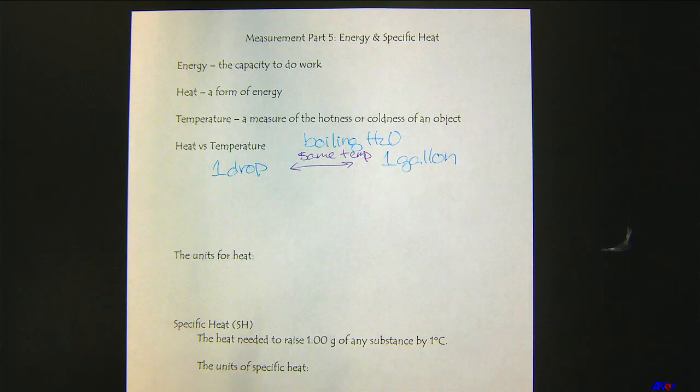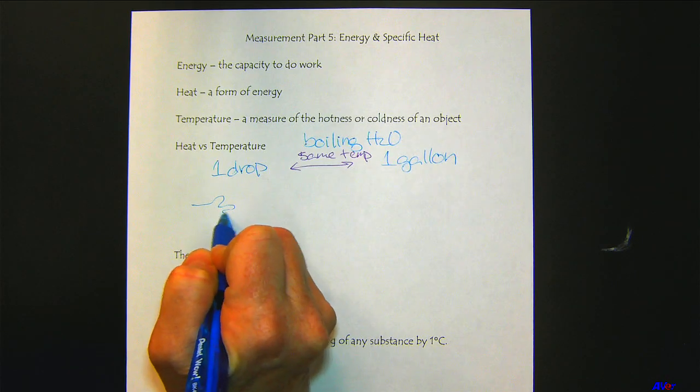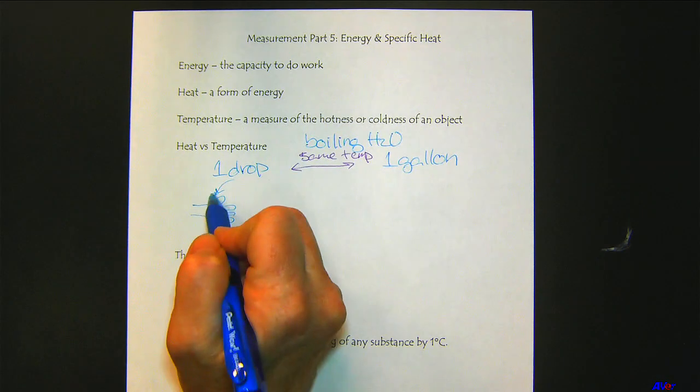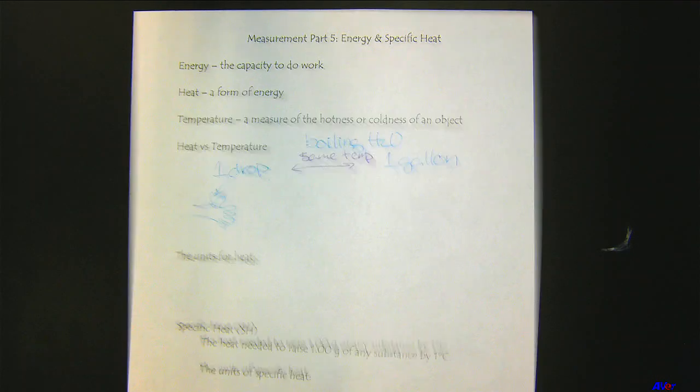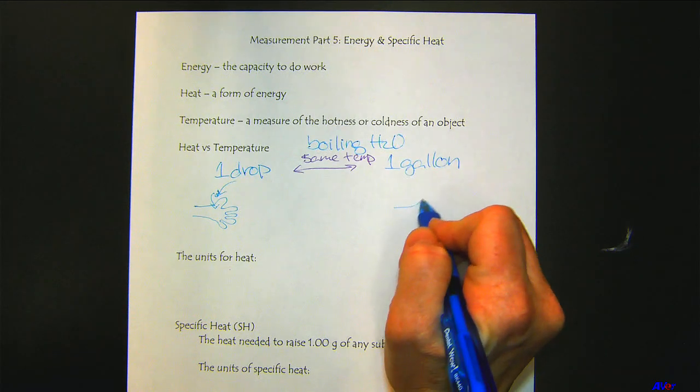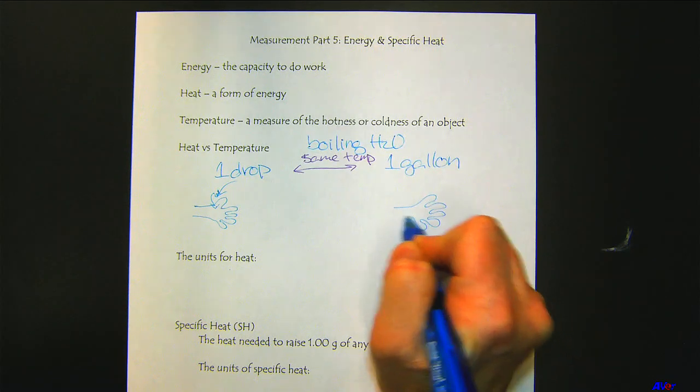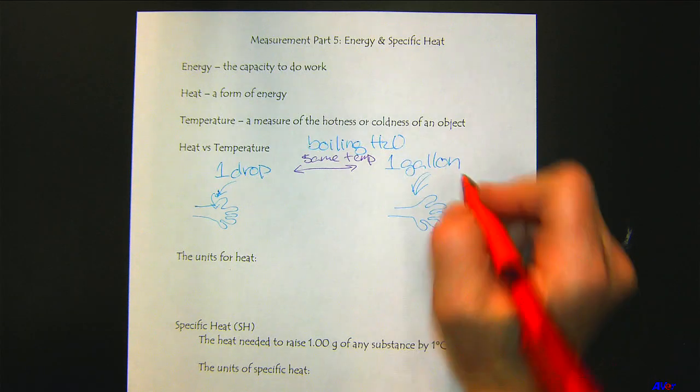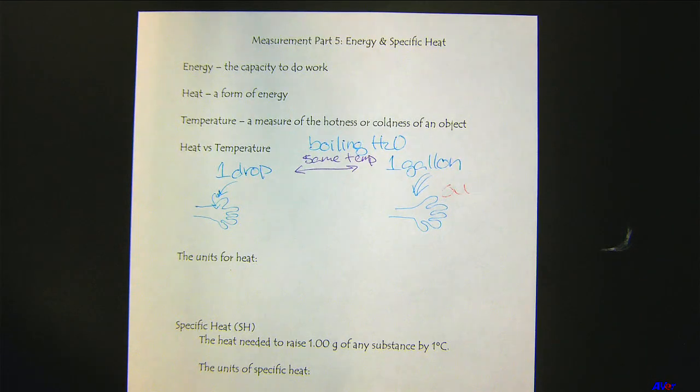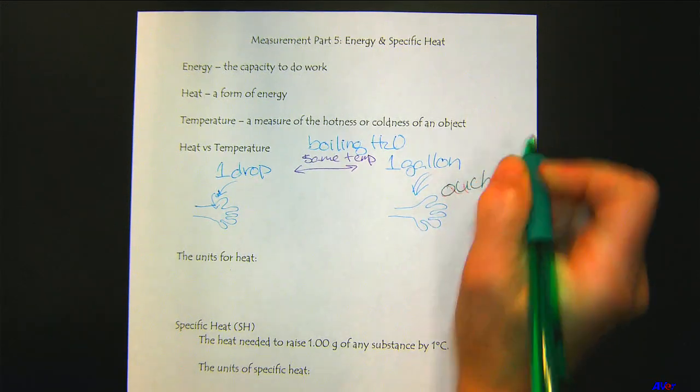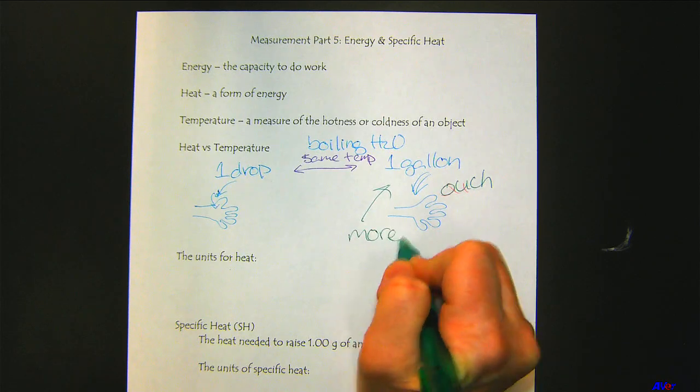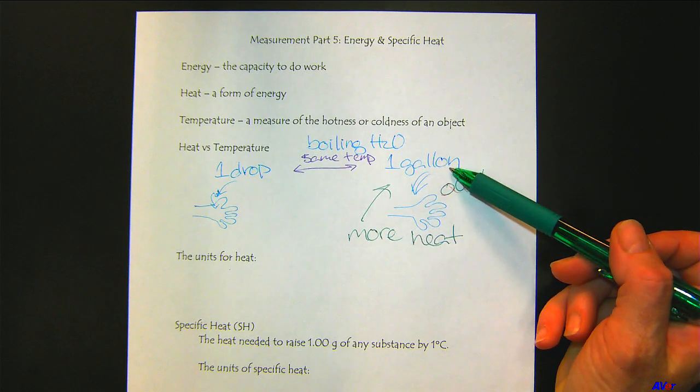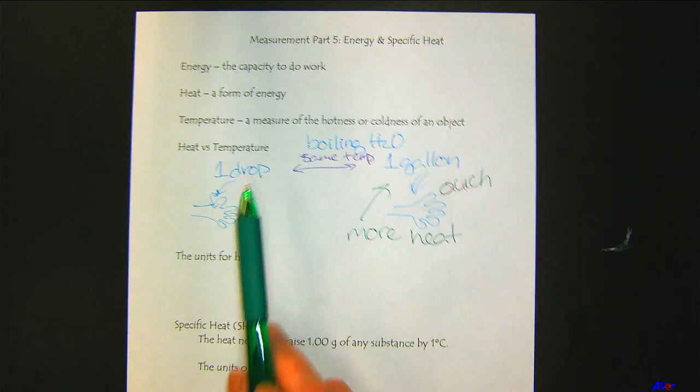But now let's think about what happens if we have our hand sitting here. If one drop of boiling water falls on our hand, it hurts for a moment, but it's not so bad. But let's say we had our hand here and someone was going to try to pour a gallon of boiling water on our hand - no way, that would be ouch. Because this has more heat. So that's our discernment - same temperature, different amounts of heat. We can accomplish a lot more with a gallon of boiling water than we can with a drop.